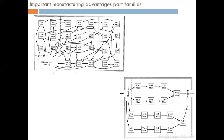Different operations take place and at the end the material comes out as a final product. The advantage of part families is that you can arrange your machines so that one sort of part which has similarities in design will follow a simple route — first turning machine, then milling machine, then drilling machine, then assembly. This saves a lot of time, is efficient, and also saves investment cost.